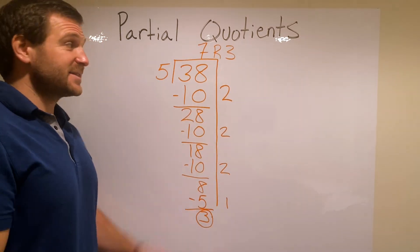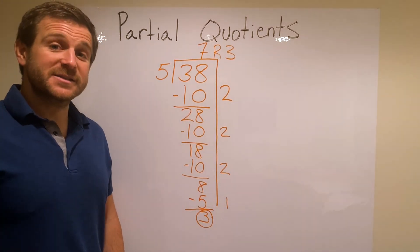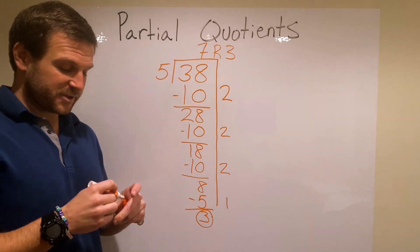And that's how you use partial quotients. Let's take a look at another example and I'll walk you through how to do that one as well.